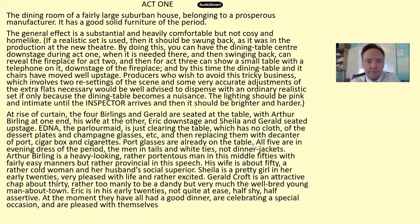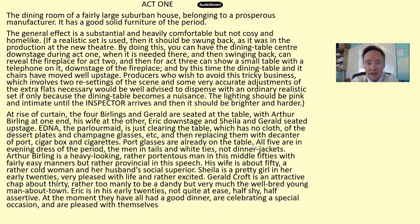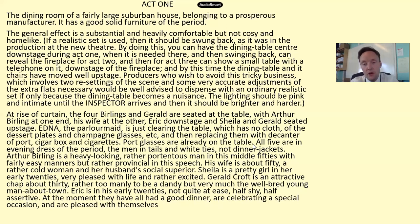In the brackets we have detailed instructions from J.B. Priestley telling directors and producers how to stage An Inspector Calls. The most helpful details surround the lighting. The lighting should be pink and intimate — your teachers will have picked up on the idea of pink being suggestive of love and warmth, how the Birlings are inclined to see the world through rose-tinted spectacles.